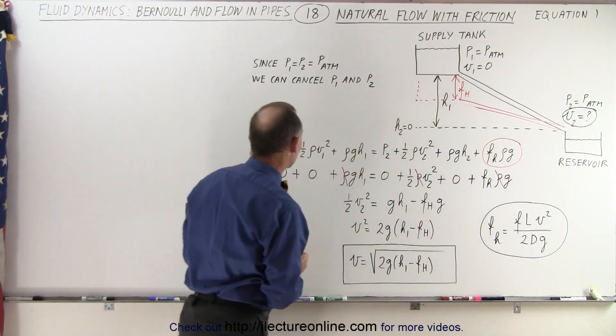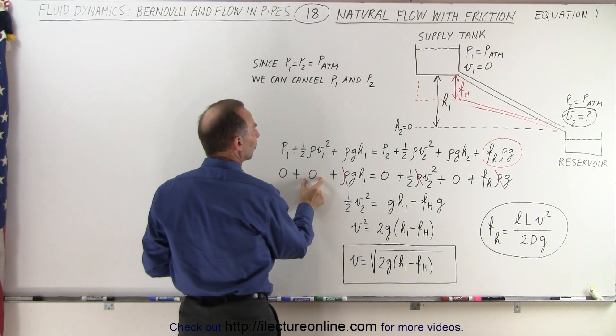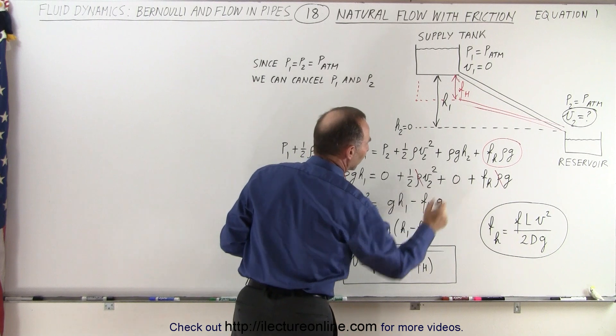So the first thing we're going to do is get rid of the pressure on both sides because they're equal. Then we realize the velocity at the top is equal to zero and the height at the bottom is equal to zero.